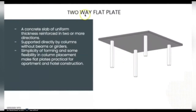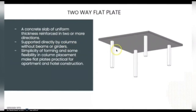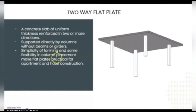Next is the two-way flat plate. It is a concrete slab of uniform thickness reinforced in two or more directions, supported directly by columns without beams or girders. The simplicity of forming and plan flexibility and column placement make flat plates practical for apartment and hotel construction.